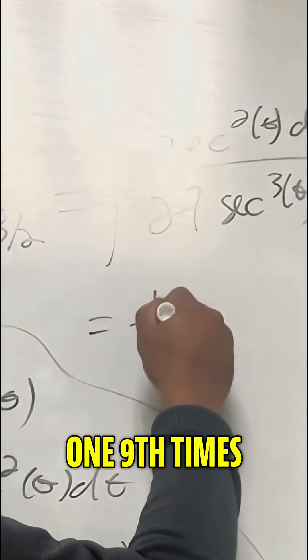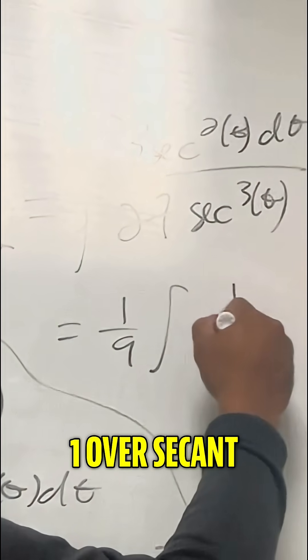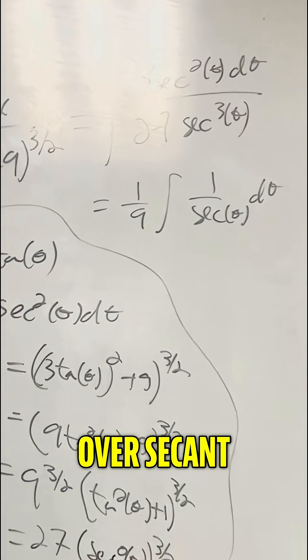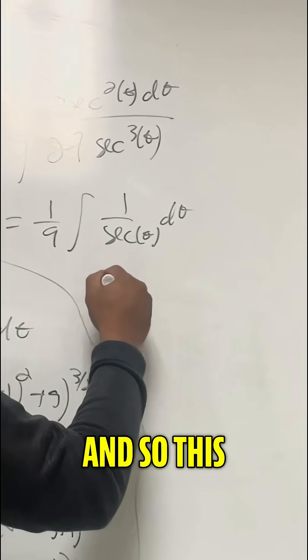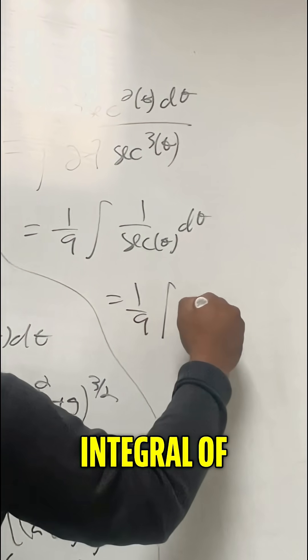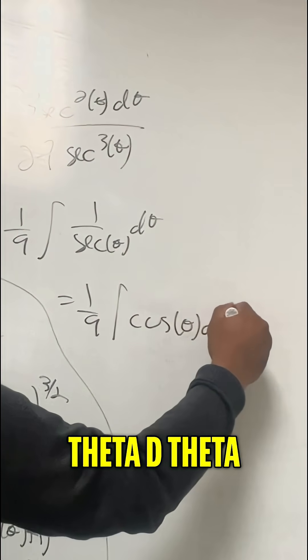Simplifying, we get this is 1 ninth times the integral of 1 over secant of theta d theta. But we know 1 over the secant is the cosine, right? And so this becomes 1 ninth of the integral of cosine of theta d theta.